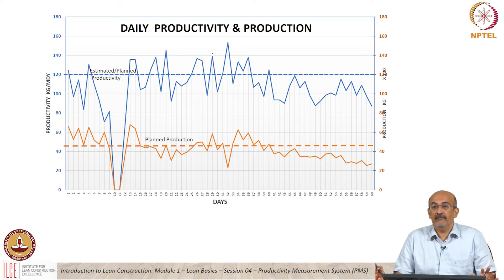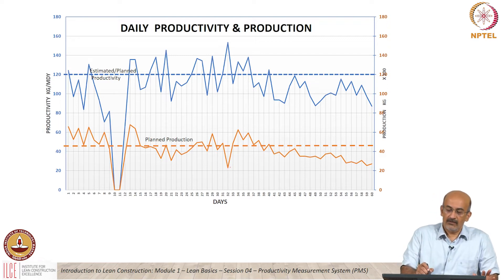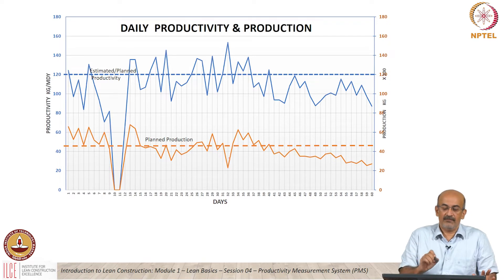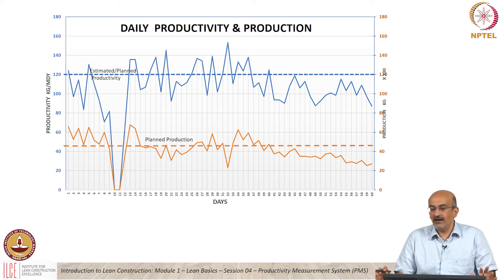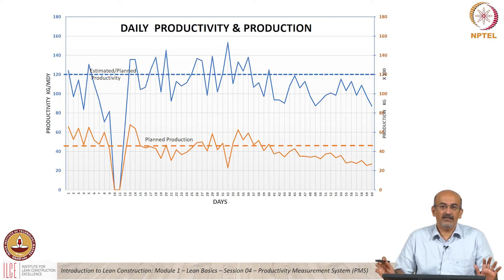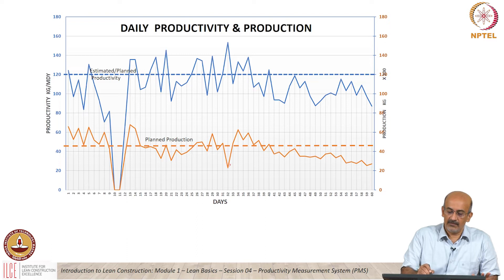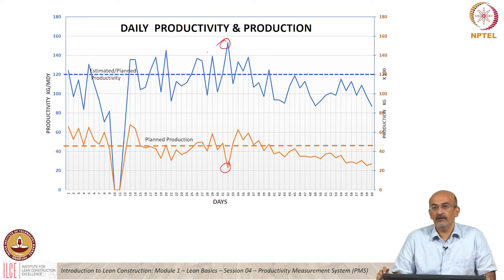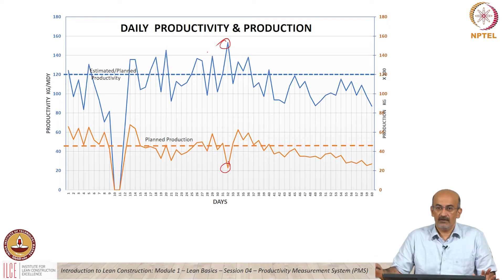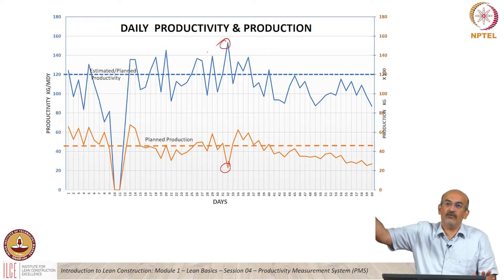Is the productivity and production trend similar? We had asked this question last time also. In general, they might be similar if the crew size is roughly the same. But if there are disruptions, they need not be similar, as illustrated here. Here production takes a dip but productivity is a peak. Why did this happen? Most likely the crew numbers could have reduced — so production reduced, but the productivity is still high; the output that crew put in is high.